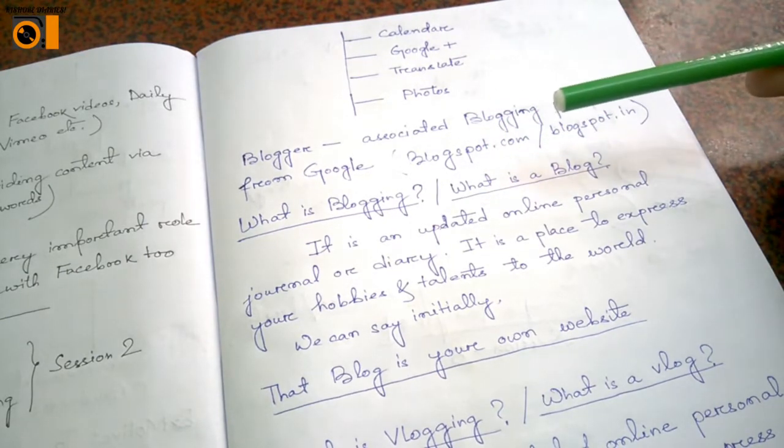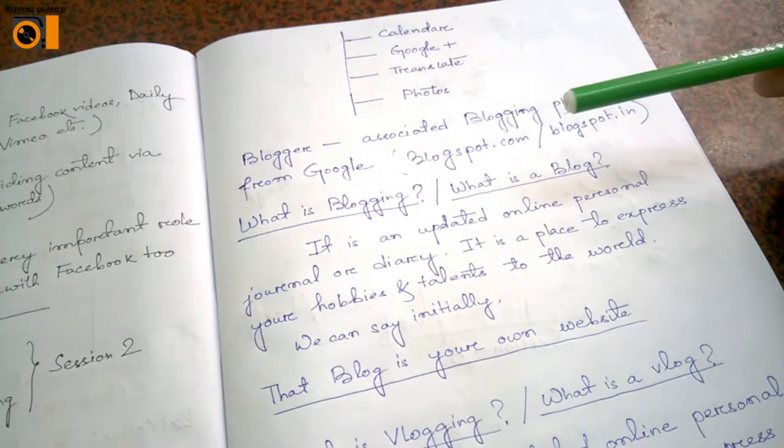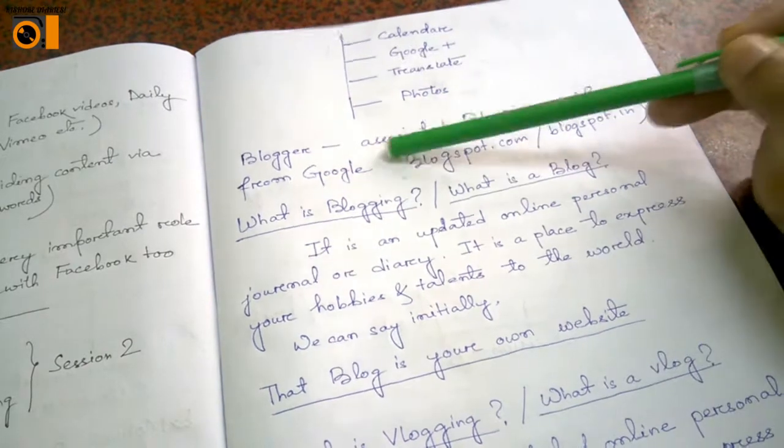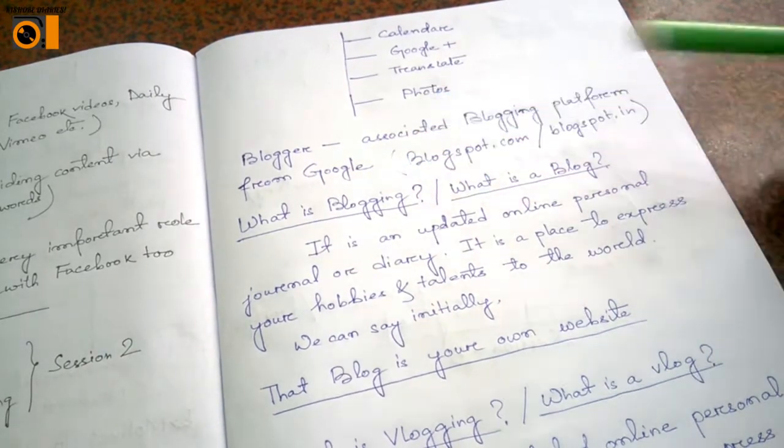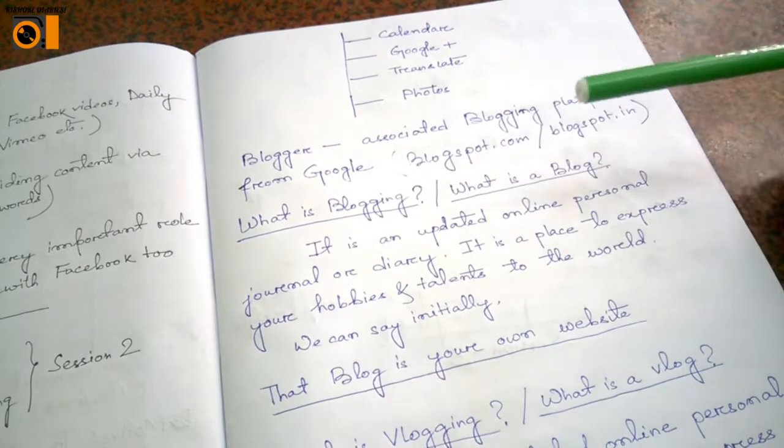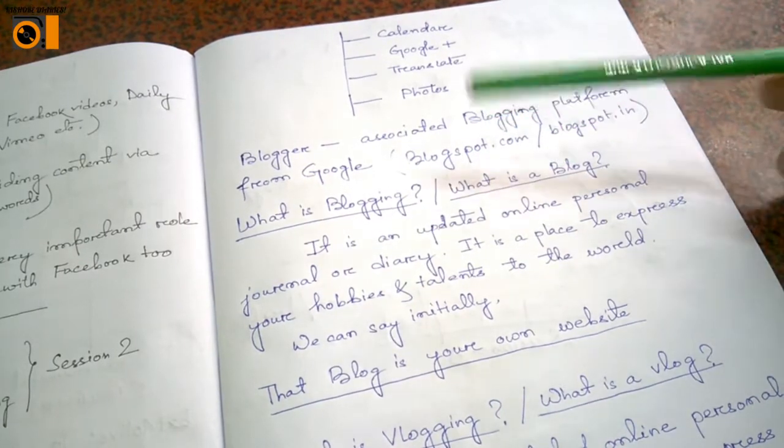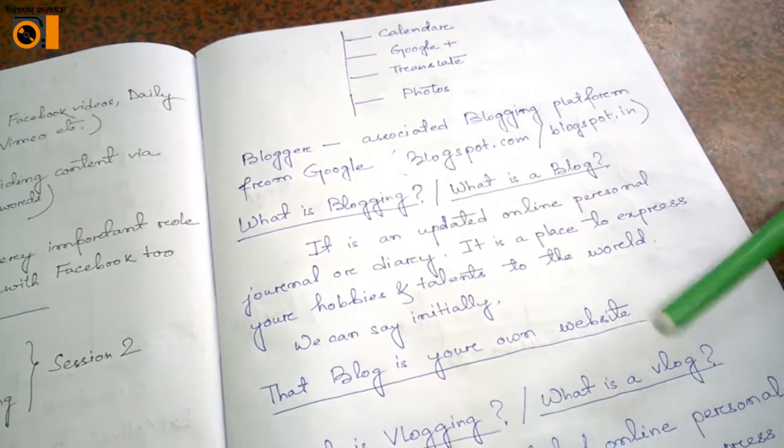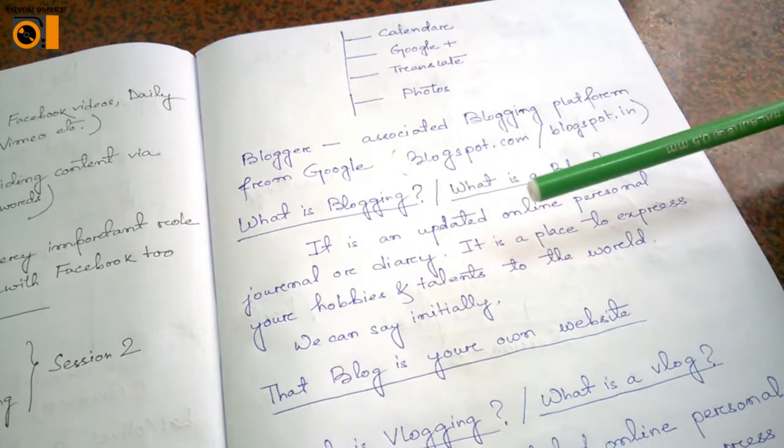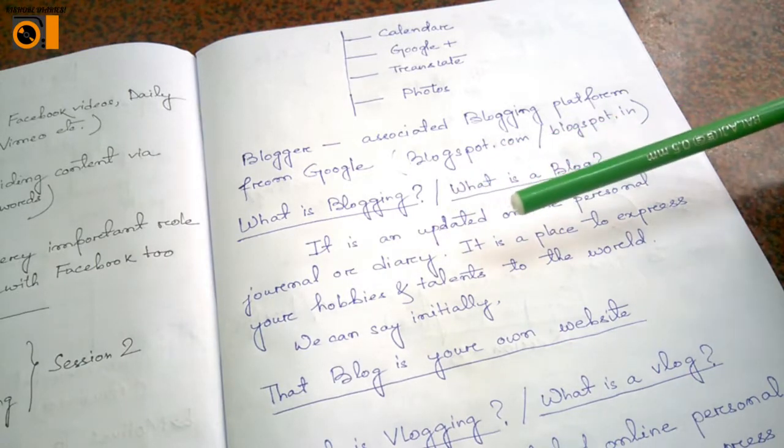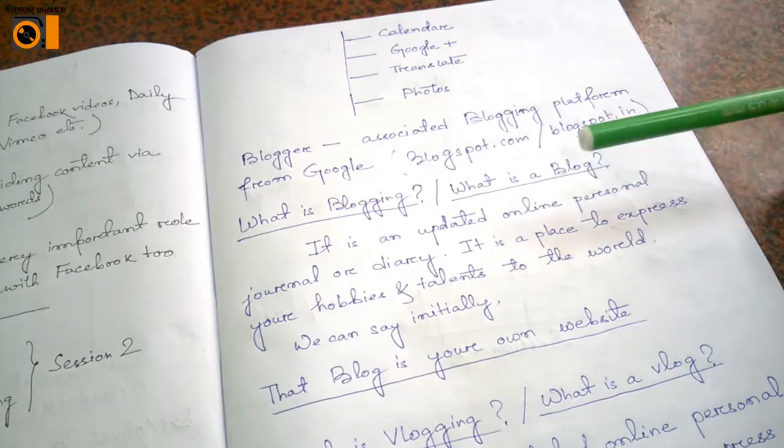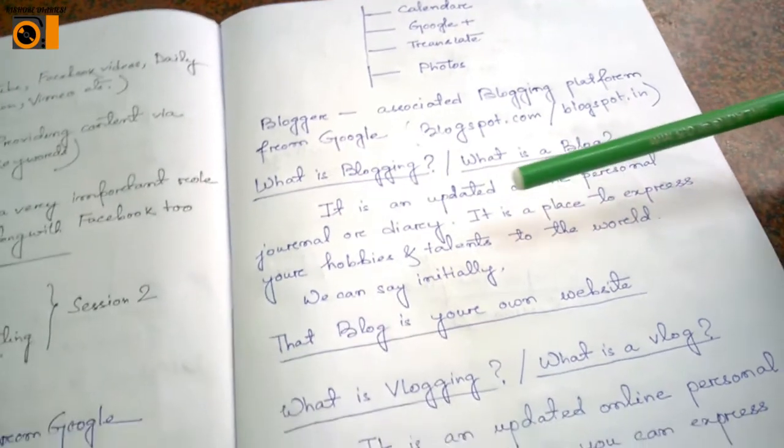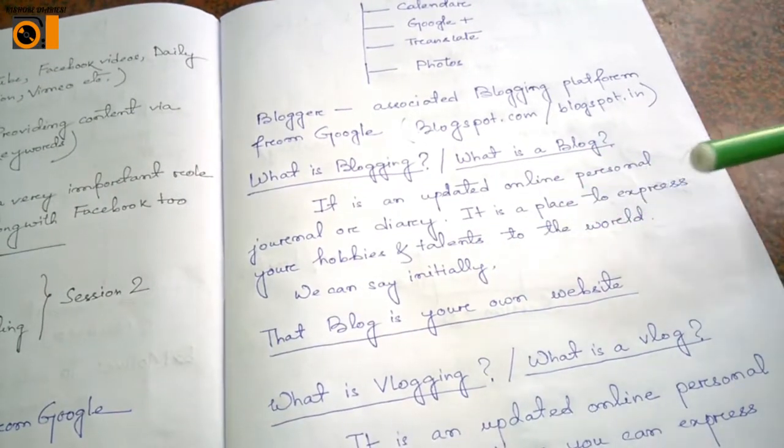Apart from that, there is Blogger. Blogger is an associated blogging platform from Google. It is known as blogspot.com or blogspot.in in India. So here is the thing: where do we do blogging? First we have to know what is blogging or what is a blog. It is an updated online personal journal or diary. It is a place to express your hobbies and talents to the world. We can say initially that a blog is your own website.